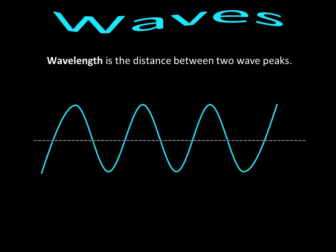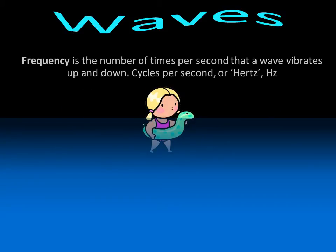The wavelength is the distance from peak to peak or trough to trough. The frequency is the number of peaks passing by any point each second.